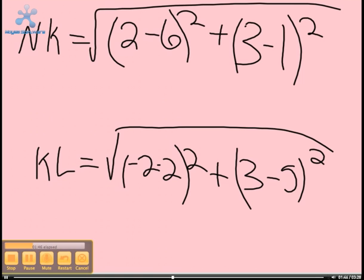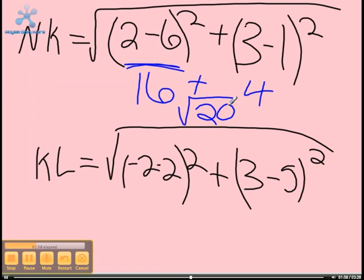And for KL, it would be negative 4 squared, which would be 16, plus 2 squared, which would be 4, and that would get you radical 20.